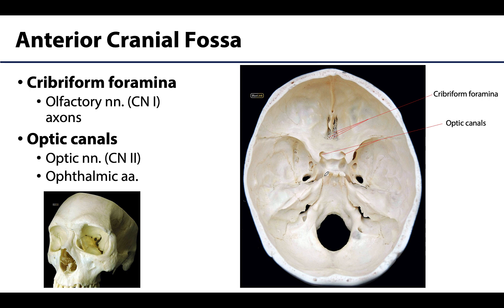Starting anterior and working our way posterior: in the anterior cranial fossa you are focusing on three bones — the frontal, which makes up the majority; the ethmoid, which is small but complex and important; and the sphenoid with its lesser wings. In the ethmoid region there are many small foramina referred to as cribriform foramina, meaning sieve-like. These allow the olfactory nerve axons — cranial nerve I — to traverse this region.